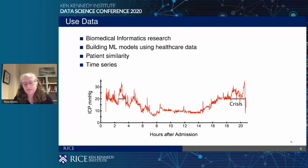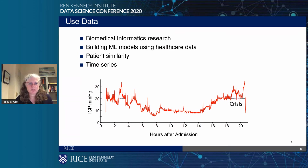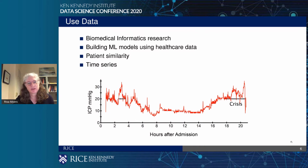The other area of research I do is what I would call biomedical informatics research — it's really about building machine learning models using healthcare data. Things I'm interested in include patient similarity and time series data. For example, this plot is a graph of a patient's intracranial pressure over time, published in Critical Care Medicine. We're looking at: can we look at a patient over time and predict half an hour or an hour or four hours in the future whether they're going to go into a crisis mode with elevated intracranial pressure? If we can alert someone in time, something can be done to intervene.